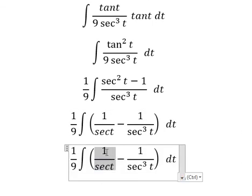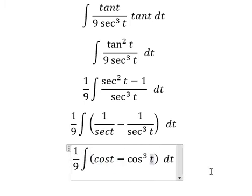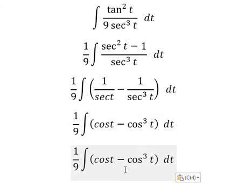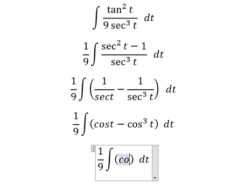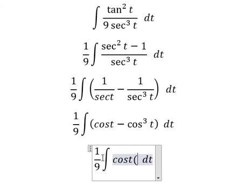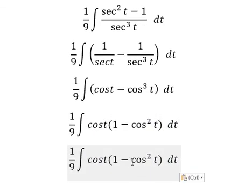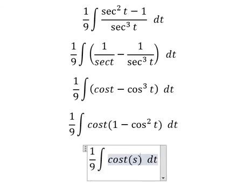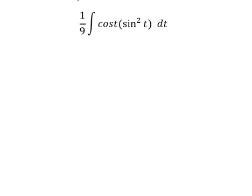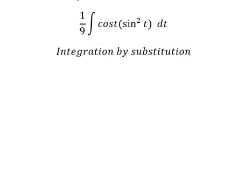One over secant t is cos t. Similarly for the other term, cos t times cos t can be factored. Using the identity, one minus cos squared t gives sin squared t. Now we can use integration by substitution.